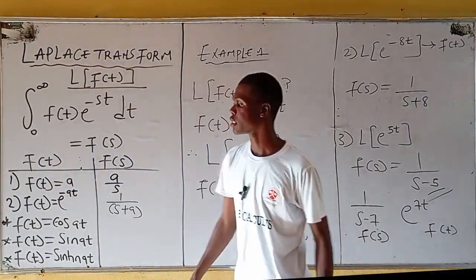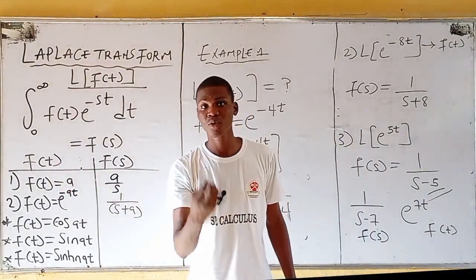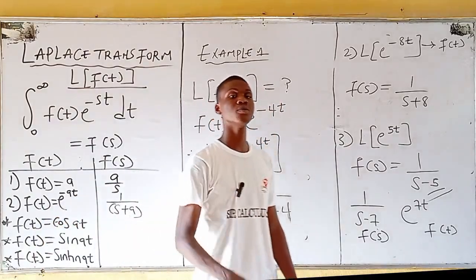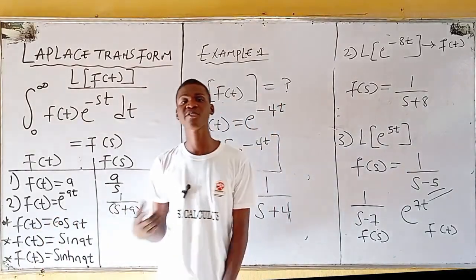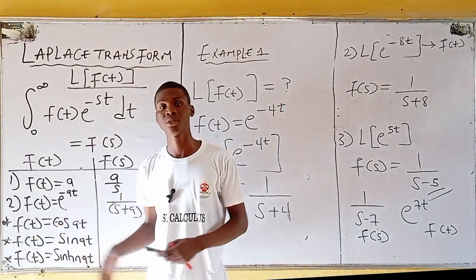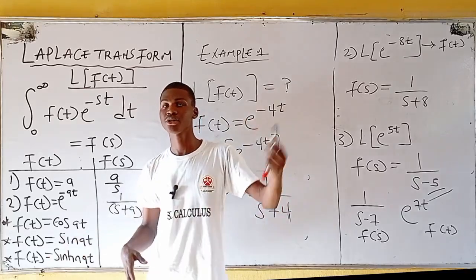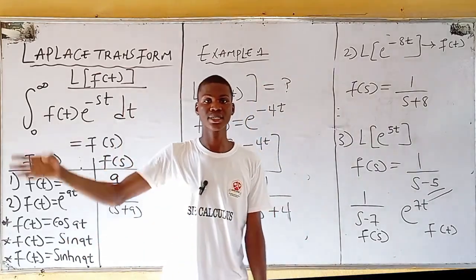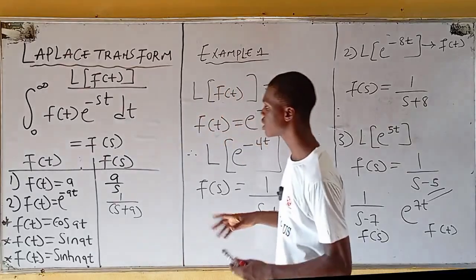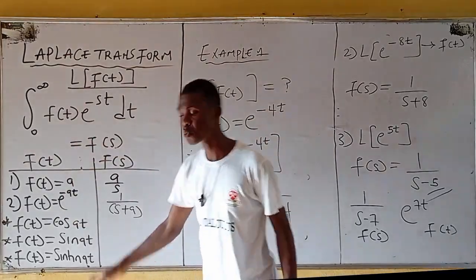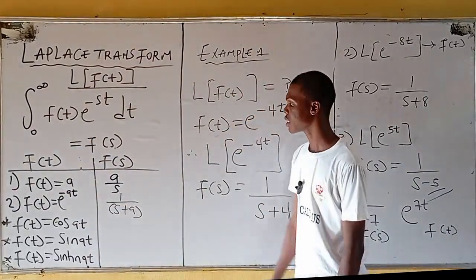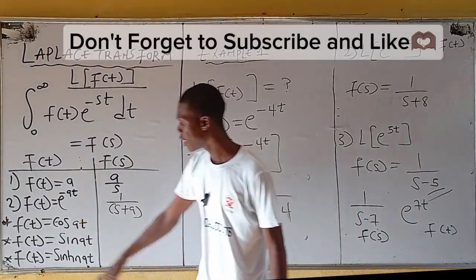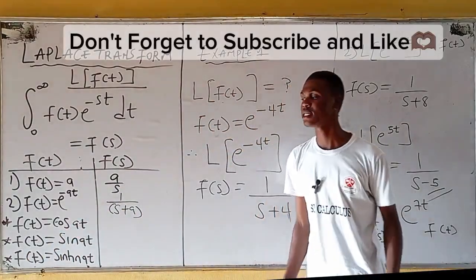That reminds me of the analogy I mentioned earlier: it's just like differentiation and integration. Given sin(θ), the derivative is cos(θ); given cos(θ), the integral is sin(θ). It works vice versa. You need to know each function's transformation and its inverse. Next, let's look at the transformations when f(t) = cos(at) and when f(t) = sin(at).